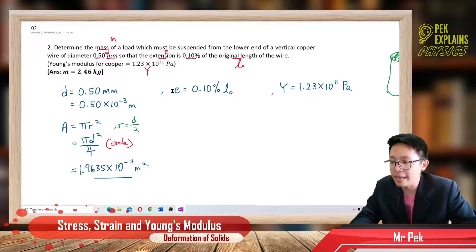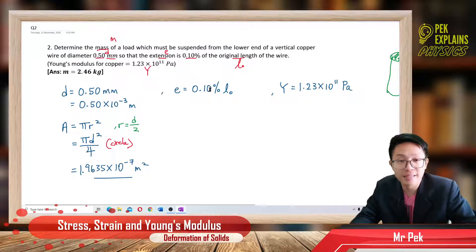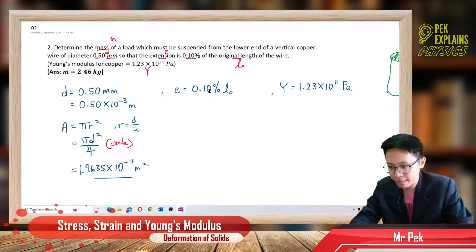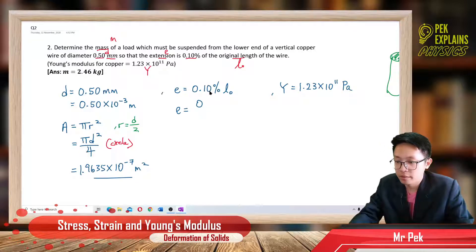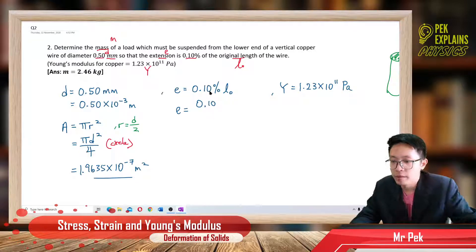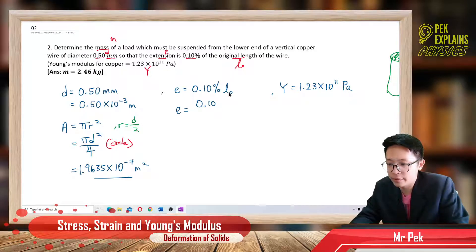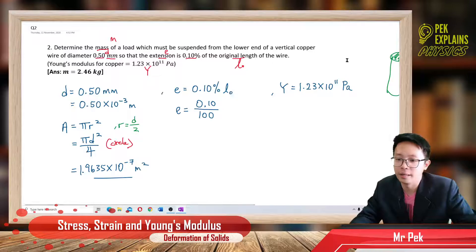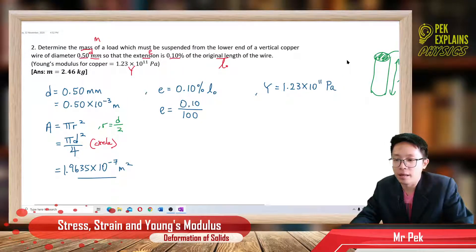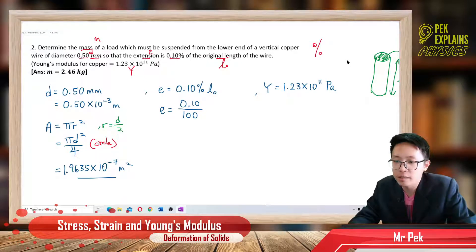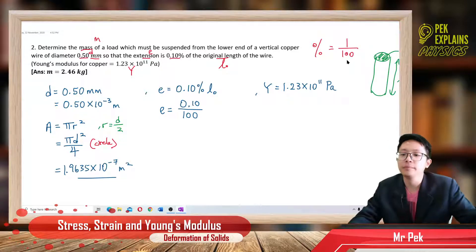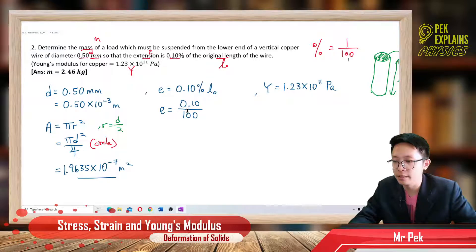Now, given the extension is 0.1% of the original length, we can change the percentage into a fraction. Always change percentage into a fraction when you see percentage. Percent means divide by 100 — it's actually per 100. So remember: percent means 1 over 100.